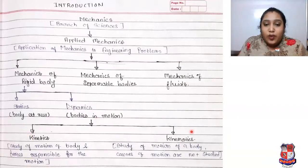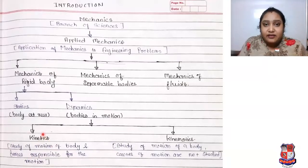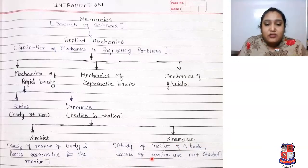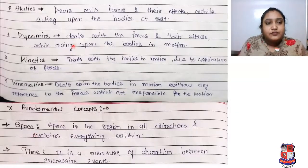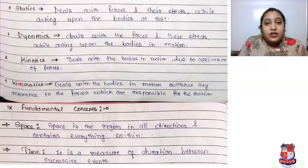In dynamics there are 2 parts: kinetics and kinematics. What is kinetics and kinematics? Kinetics is the study of motion of a body and the forces responsible for the motion. Kinematics is the study of motion of a body where causes of motion are not studied. Under this subject we have to focus on statics, dynamics, kinetics, and kinematics, and we should understand the fundamentals of these terms.